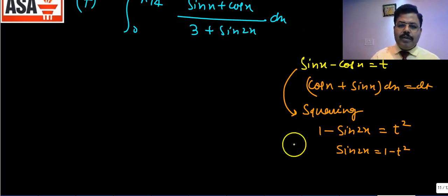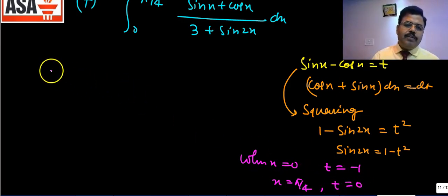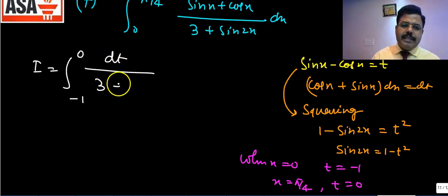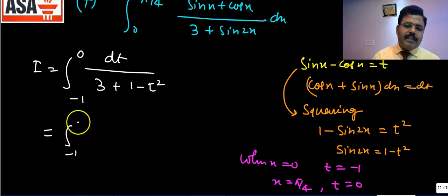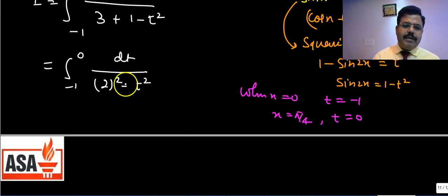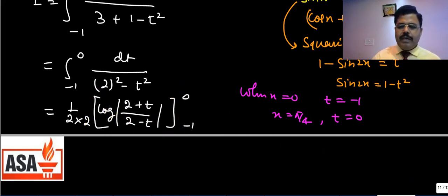Limit change: when x=0, t = sin0 − cos0 = −1; when x=π/4, t = sin(π/4) − cos(π/4) = 0. So the integral becomes ∫₋₁⁰ dt/(4 − t²).